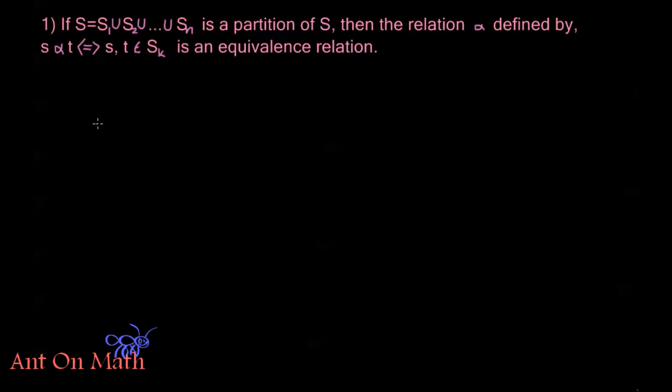The first one: I mentioned that if we have equivalence classes from an equivalence relation, those equivalence classes form a partition of a set. In this first example I'm going to show that if we have any partition of a set, that partition itself defines an equivalence relation. So if S, which equals the union of these n sets, is a partition of S — meaning each of these sets is disjoint and all elements of S are in one of them — then the relation alpha, defined by s alpha t if and only if s and t are in the same partition S_k, is an equivalence relation.